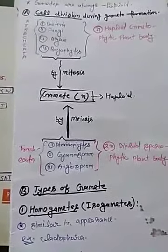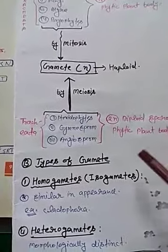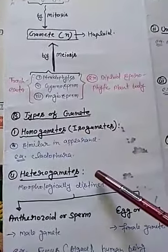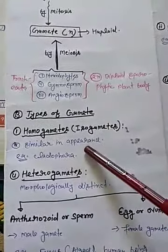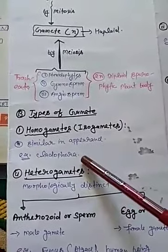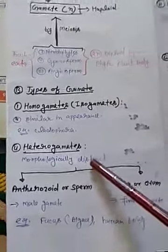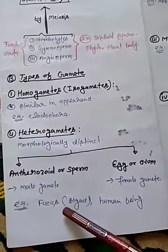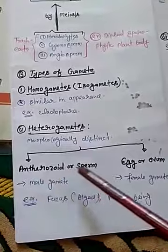The next important point is types of gametes. Gametes are of two types: homogametes and heterogametes. If gametes are similar in appearance, then they are called homogametes — example: Cladophora. If gametes are morphologically distinct, then they are called heterogametes — examples are Fucus and human beings. In heterogametes, the male gamete is called antherozoid or sperm, and the female gamete is called egg or ovum.